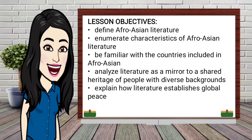To start with, let me give you the different objectives of our lesson for today. At the end of this lesson, you are expected to: first, define Afri-Asian literature; second, enumerate characteristics of Afri-Asian literature; third, be familiar with the countries included in Afri-Asian; fourth, analyze literature as a mirror to a shared heritage of people with a diverse background; and fifth, explain how literature establishes global peace.